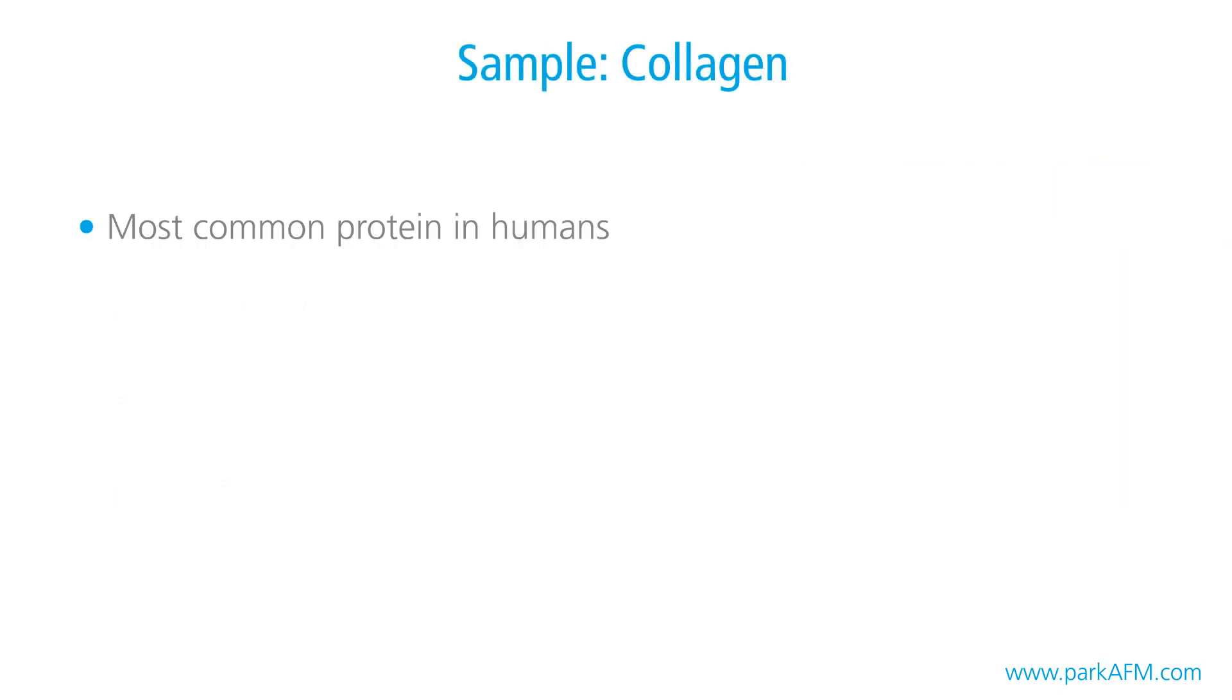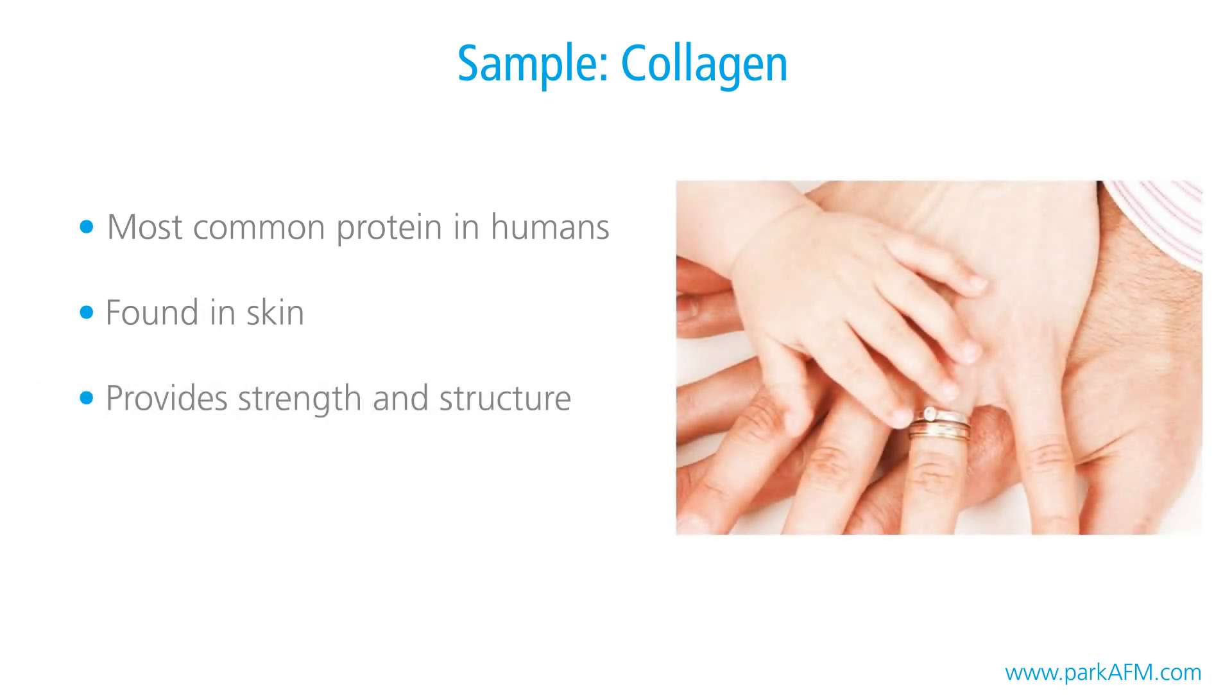And that brings us back to the sample we will be imaging today. Collagen is the most common protein in the human body and is found in many connective tissues, including our skin. It provides a matrix for our skin which gives it strength and elasticity. Understanding the structure of collagen is a great first step in understanding why our skin behaves the way it does. Let's get everything set up and start imaging.